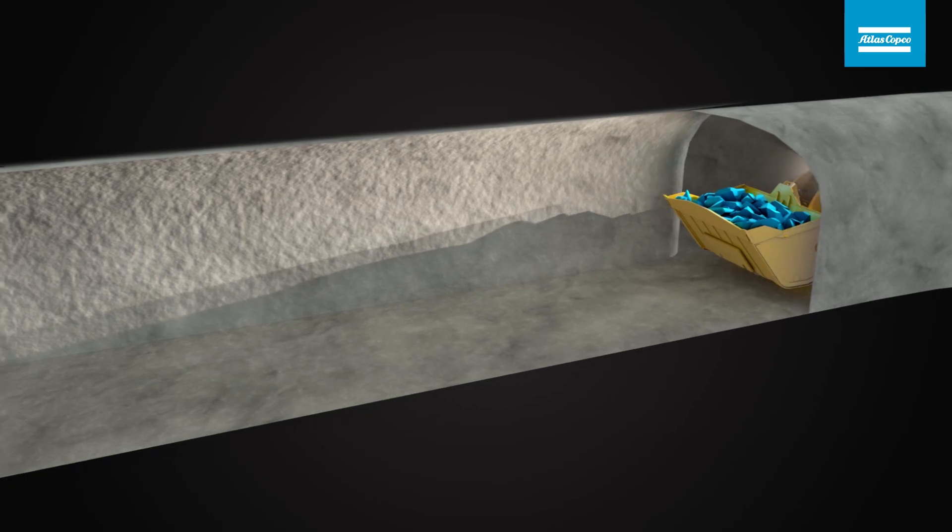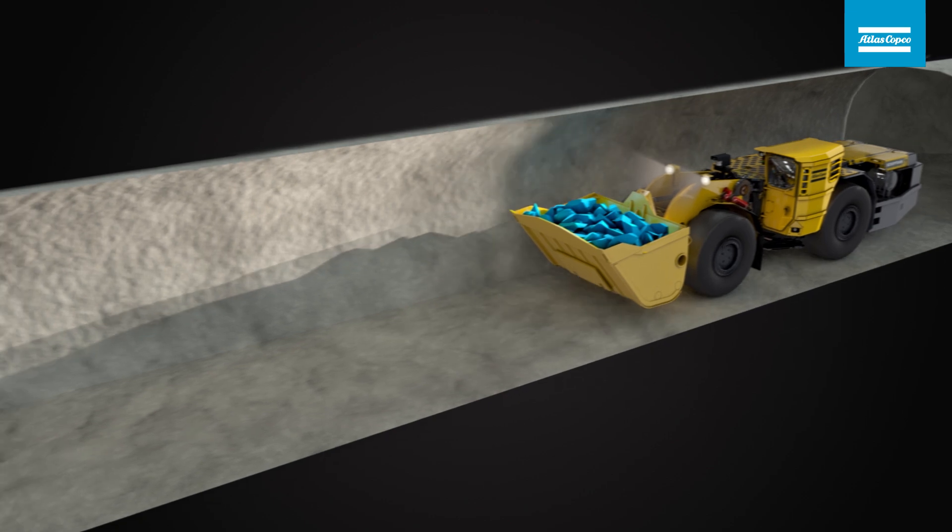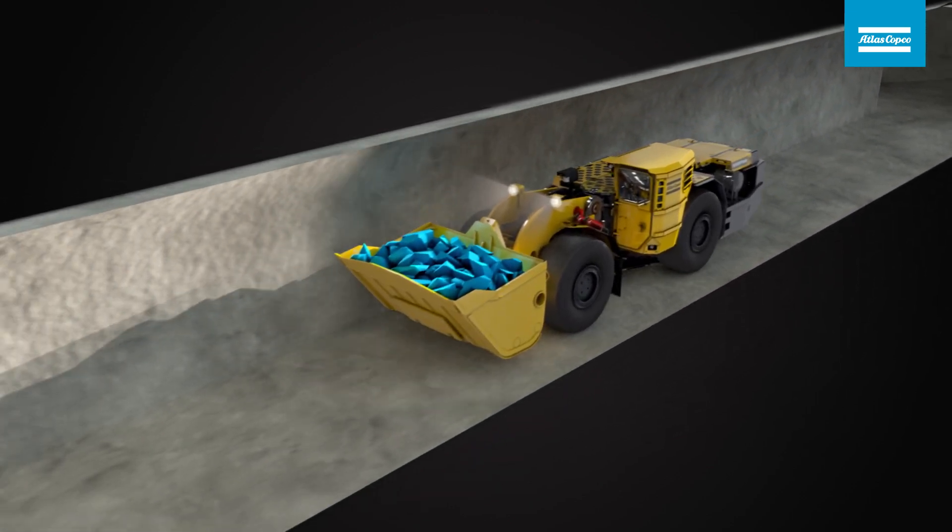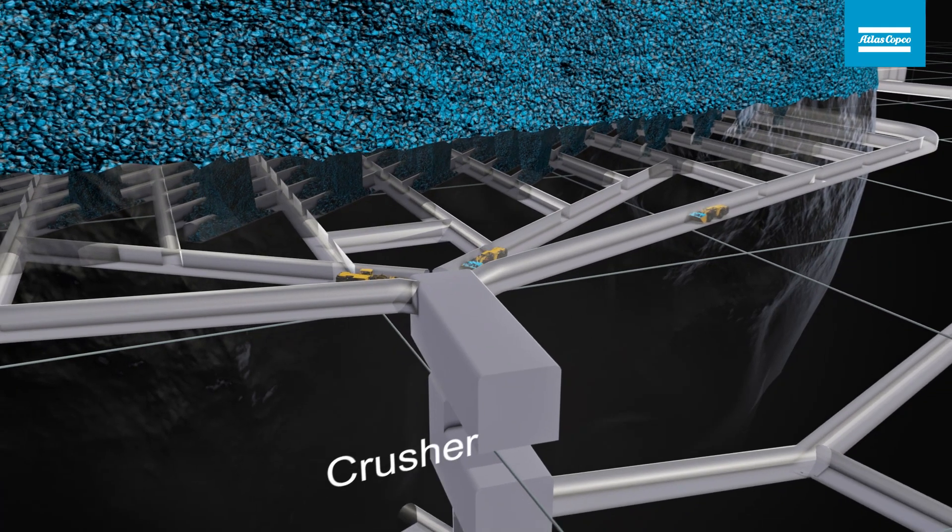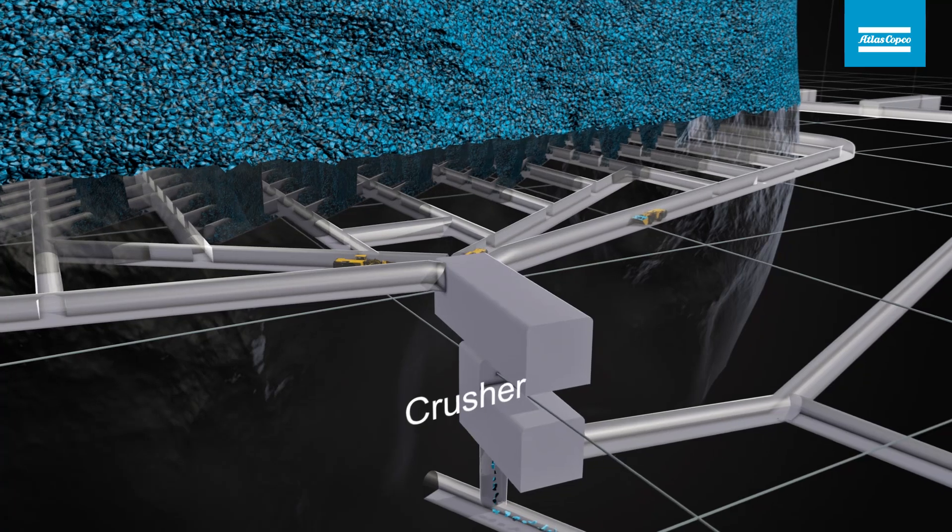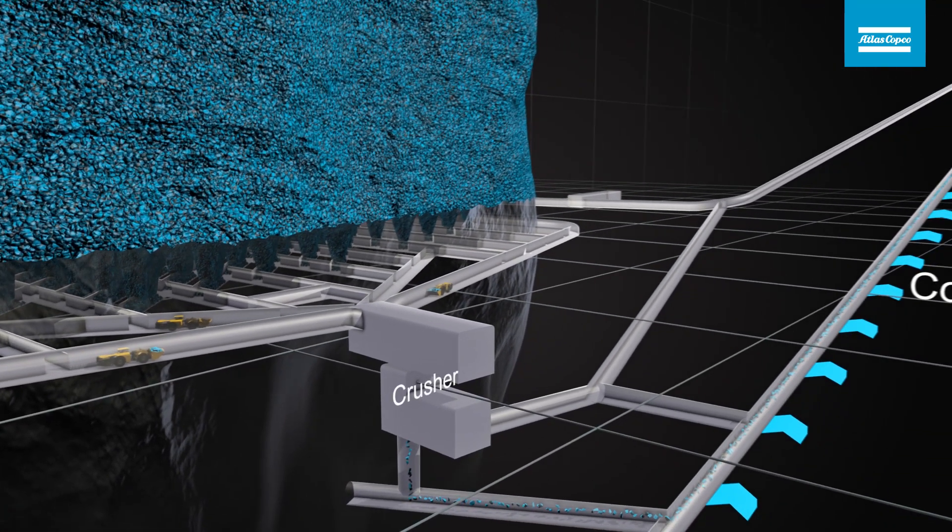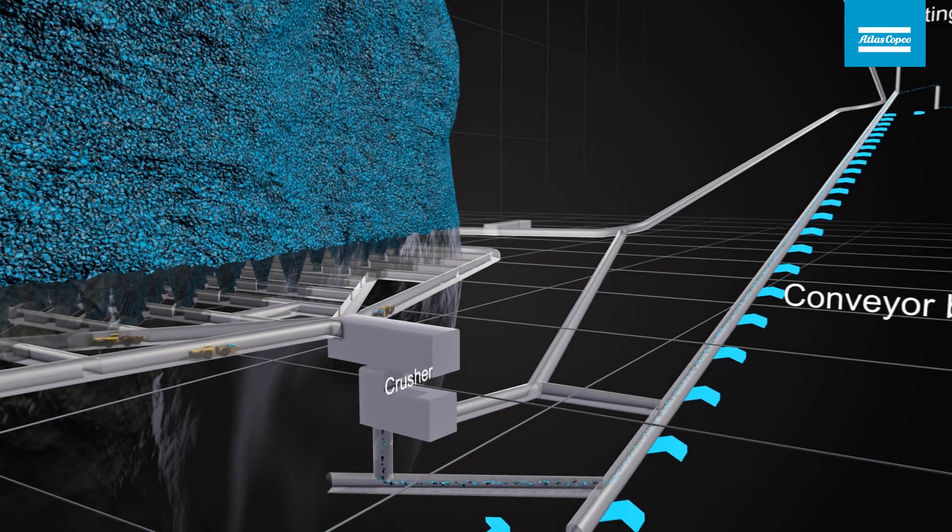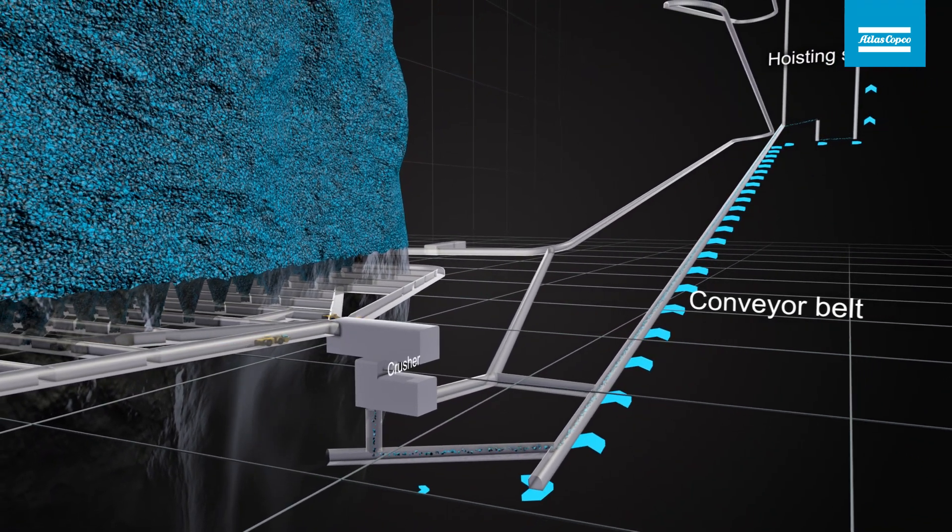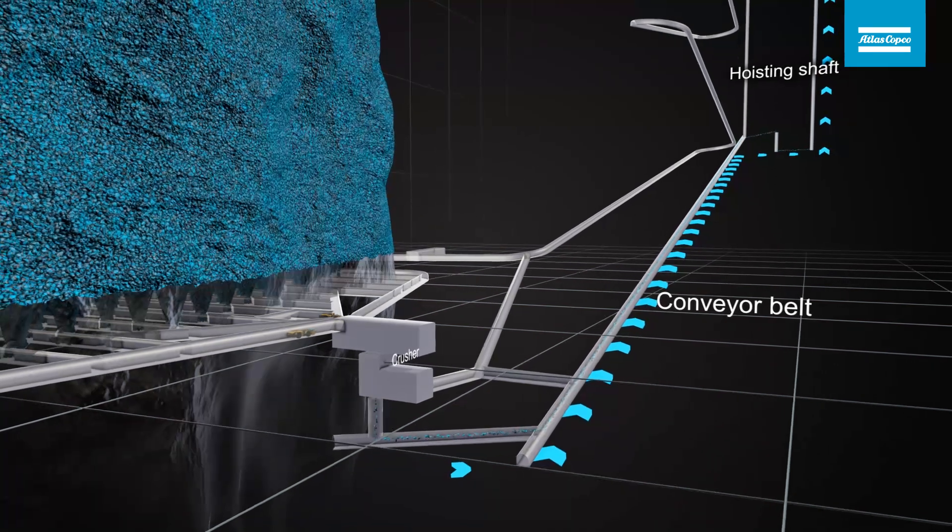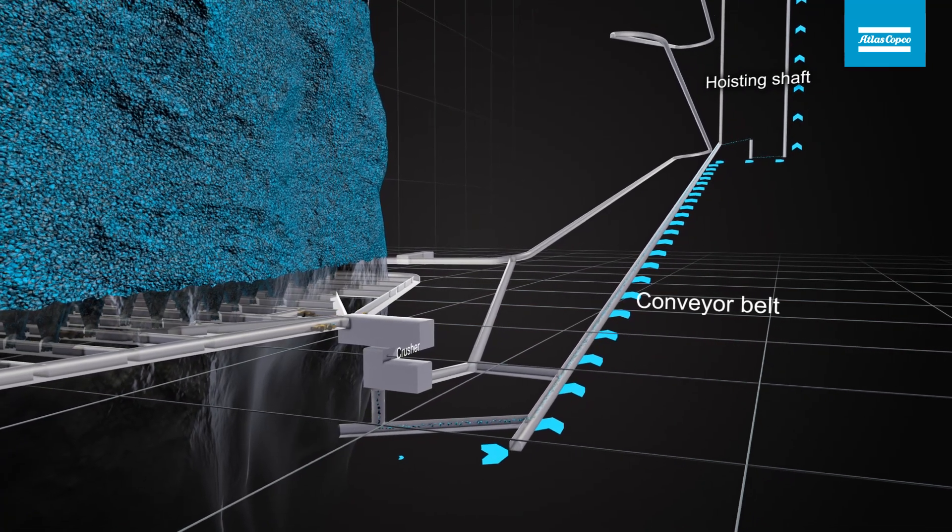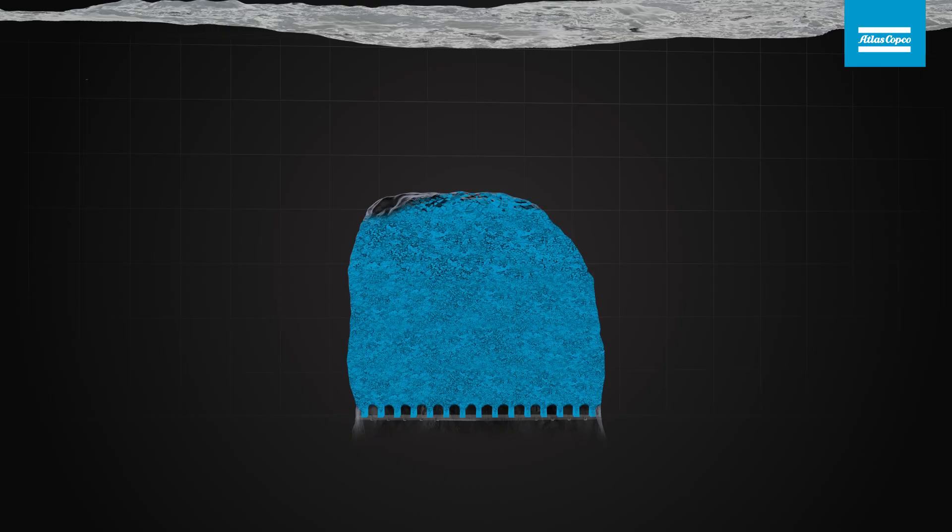Rock is loaded from the draw points and can be dumped into ore passes connected to a haulage level or directly into a crusher. A variety of transportation methods can be employed for transporting ore to surface. The fragmentation of the ore and the crushing requirements are key factors influencing the choice of a method.